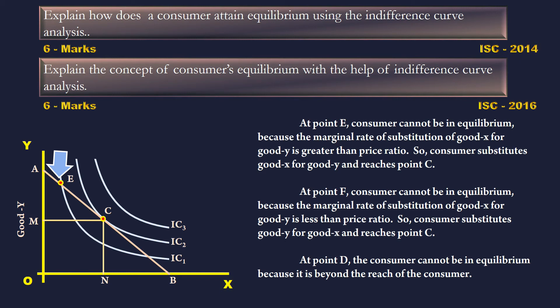So the consumer substitutes good X for good Y and reaches point C. At point F, the consumer cannot be in equilibrium because the Marginal Rate of Substitution of good X for good Y is less than the price ratio. So the consumer substitutes good Y for good X and reaches point C.